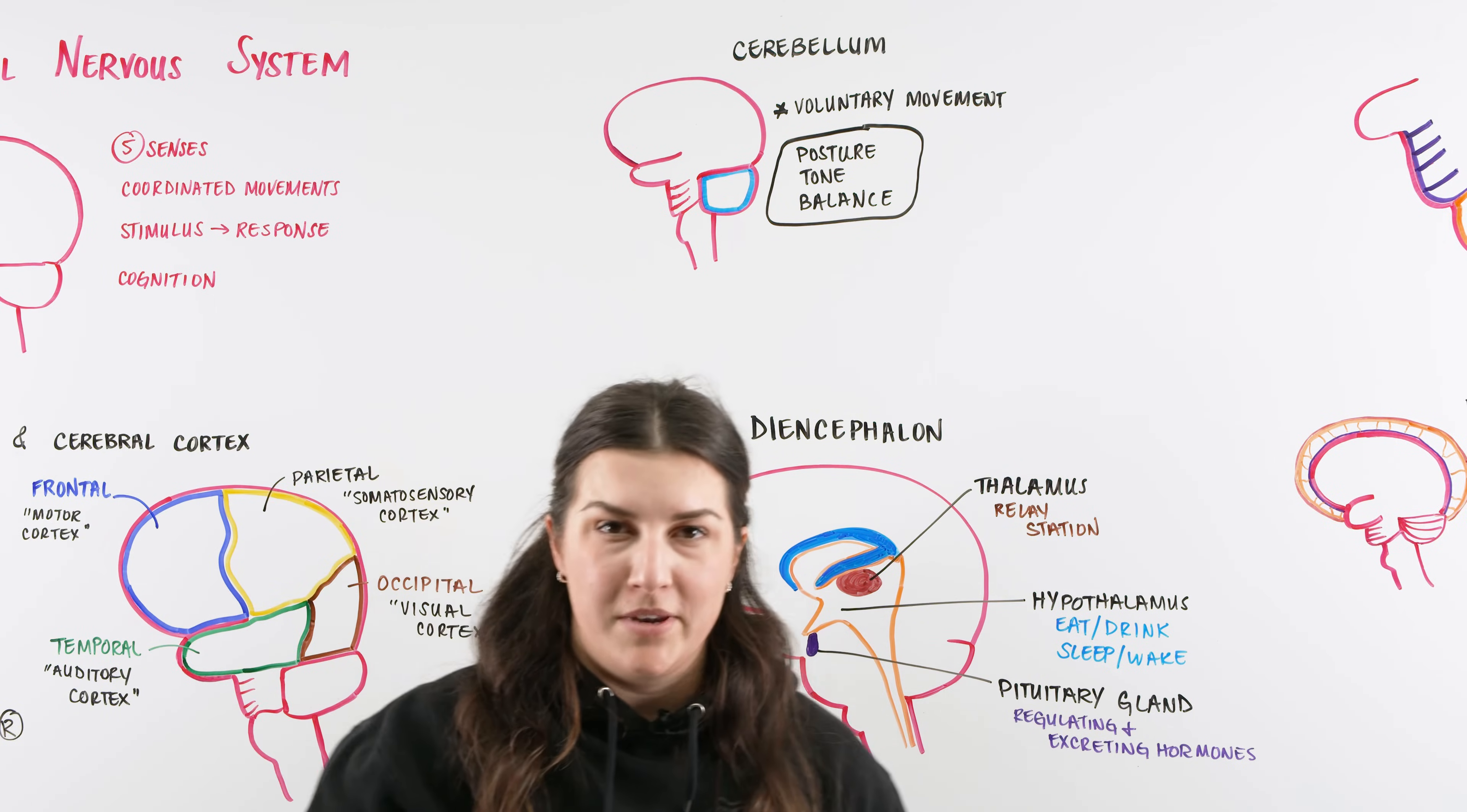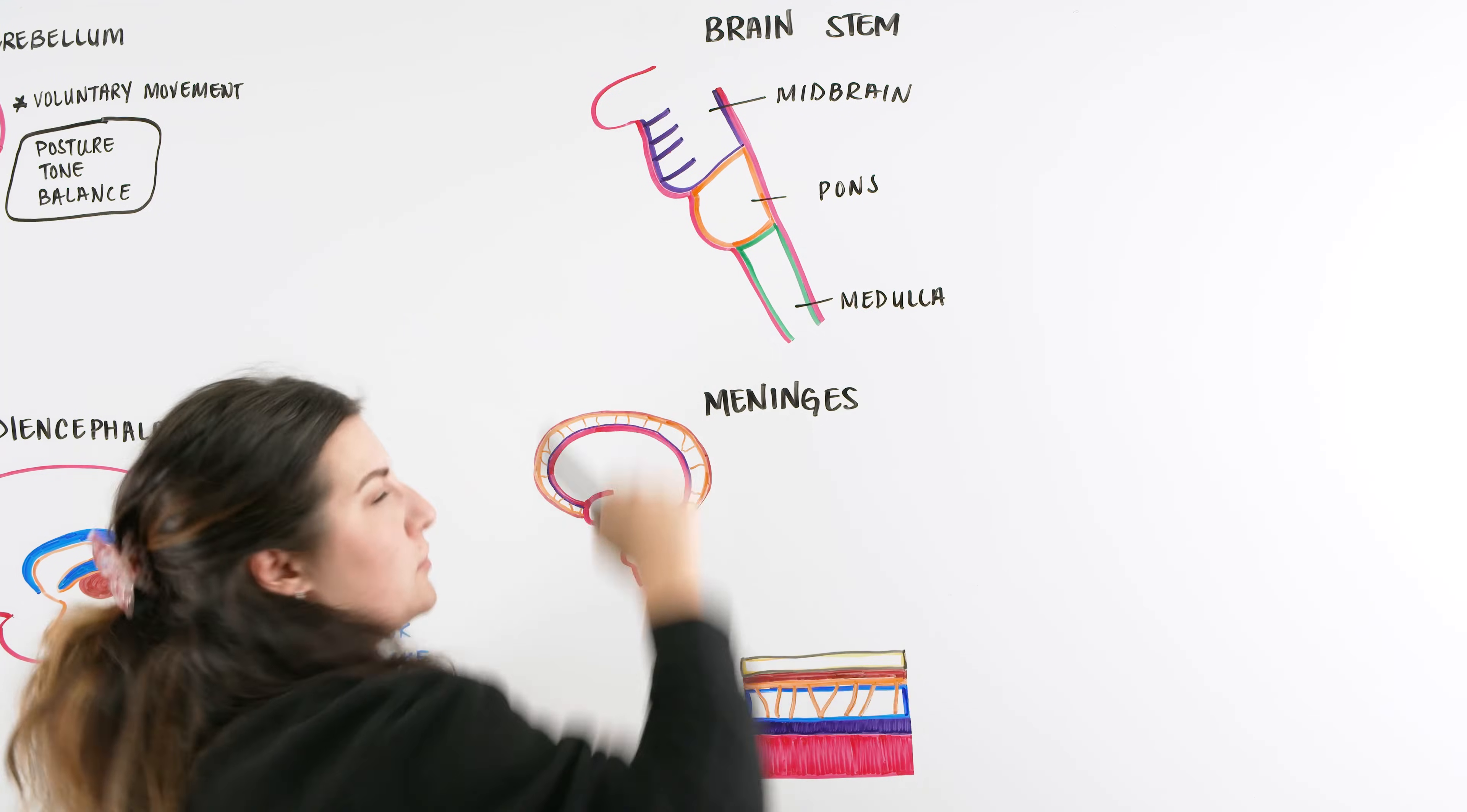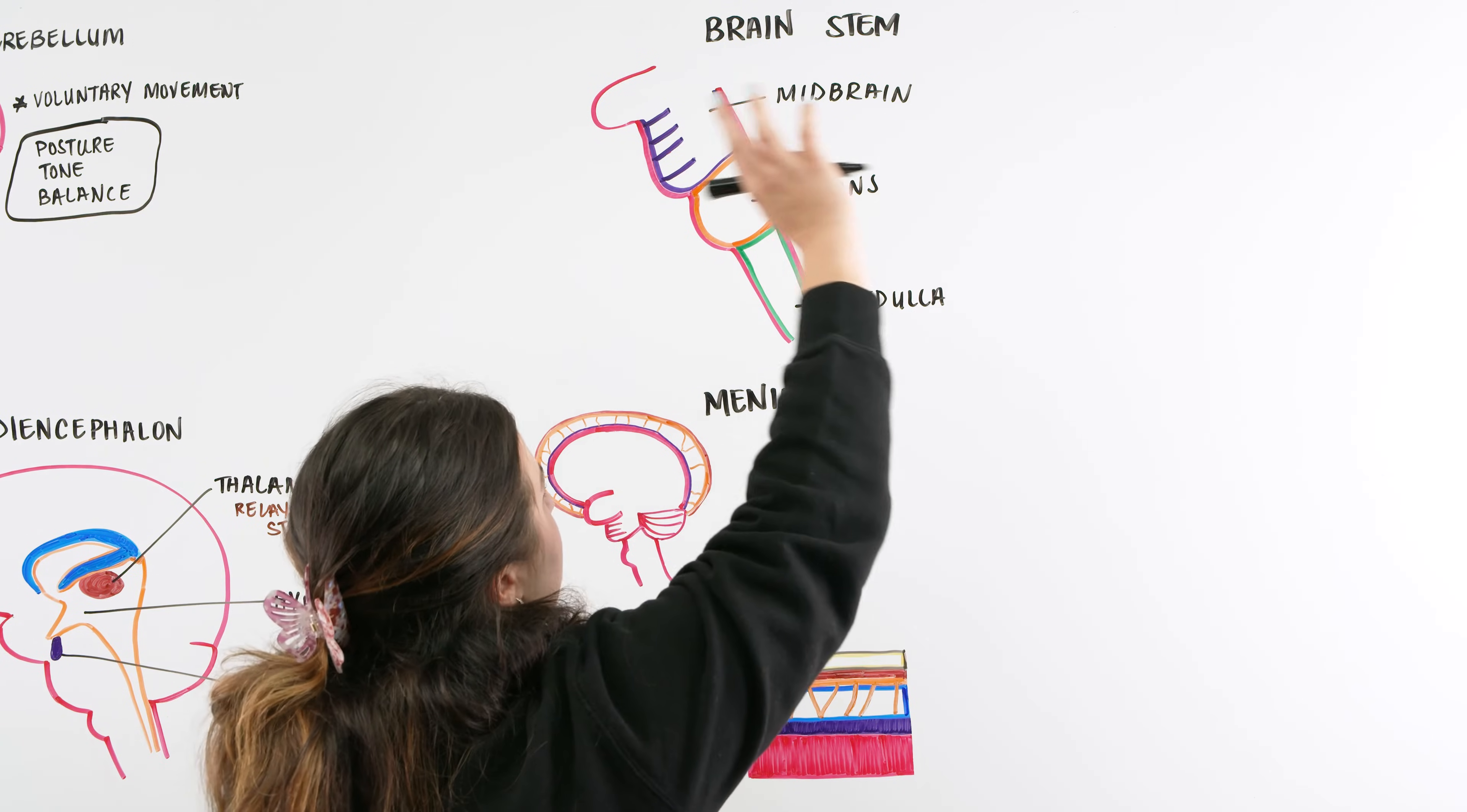Now we're going to talk about the brain stem, the portion where the brain is connected to the spinal cord, which will be the next video within the central nervous system. With the brain stem, we have three different portions: the midbrain, the pons, and the medulla. The midbrain is our area that focuses on the sleep-wake cycle, posture, and other portions like vision.